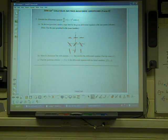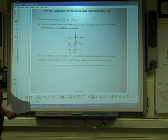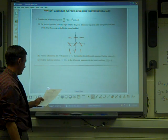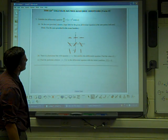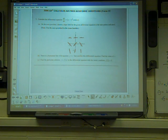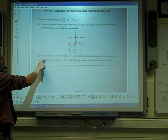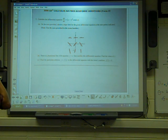So letter B. There is a horizontal line with y equals c that satisfies the differential equation. Find the value of c. There's a horizontal line with the equation y equals c that satisfies this differential equation. So they want you to find c.